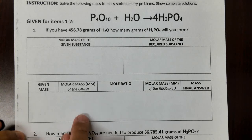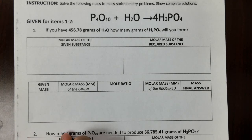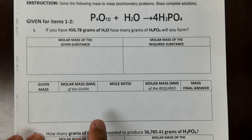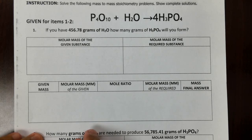In this lesson, we will be learning about how to do the mass-to-mass stoichiometry conversion with the integration of the molar mass calculation. We need to be able to calculate the molar mass first before we can convert from mass to mass.